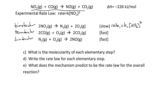For the second step, rate₂ = K2[CO]²[O2], because there are two CO molecules making it second order in CO and one oxygen making it first order in O2. For the third elementary step, it is first order in both N2 and oxygen.